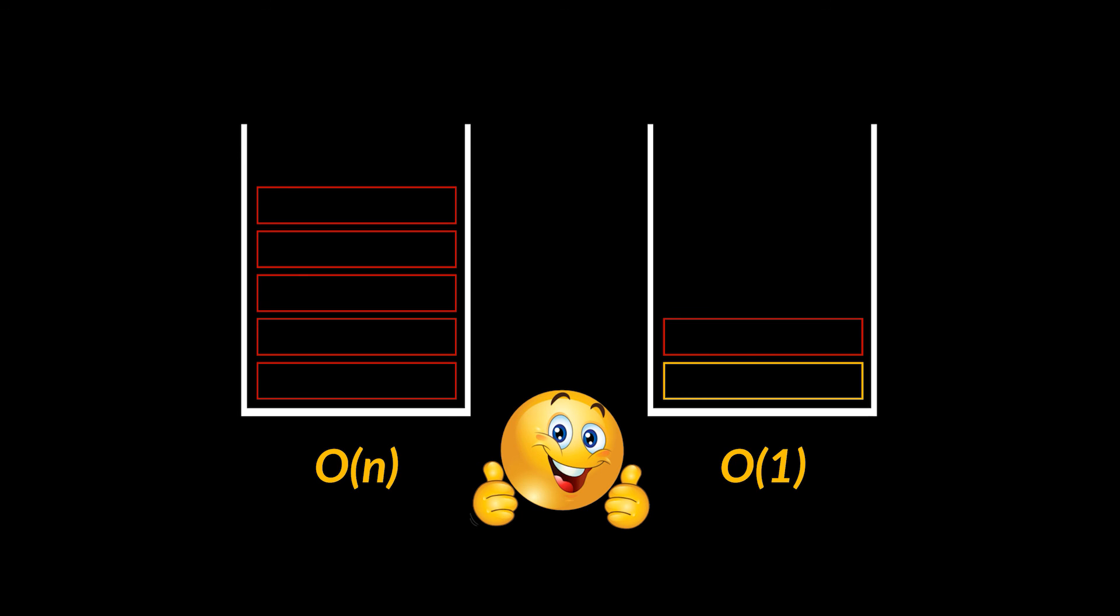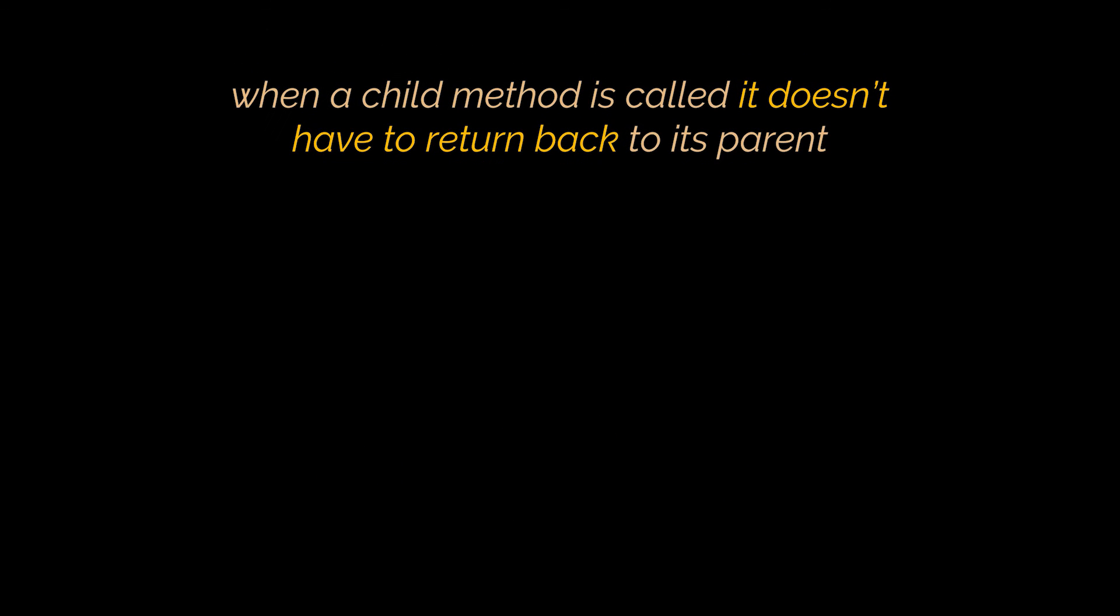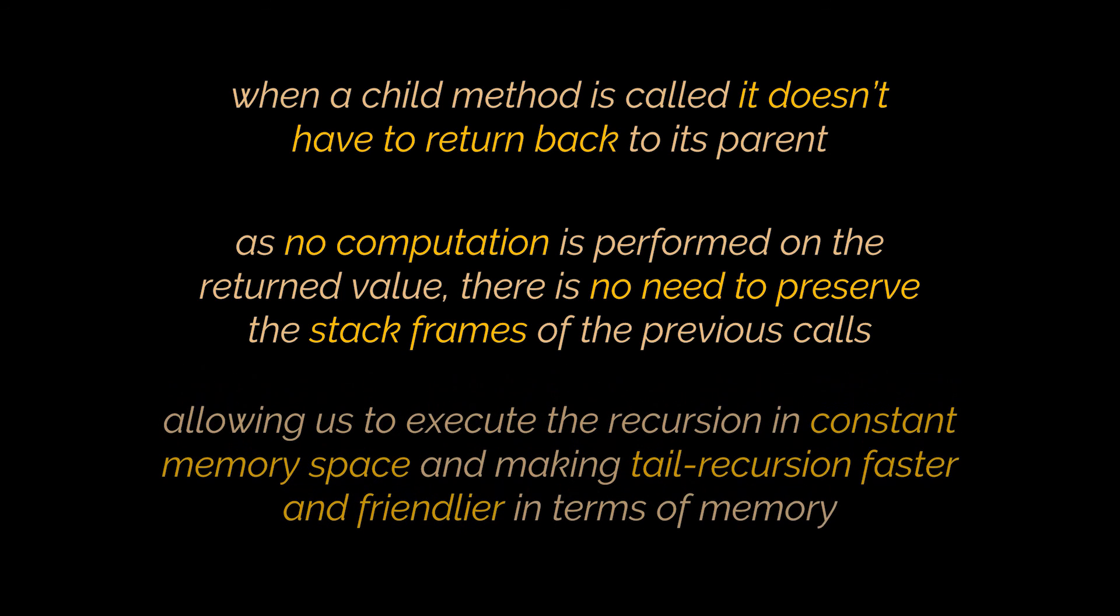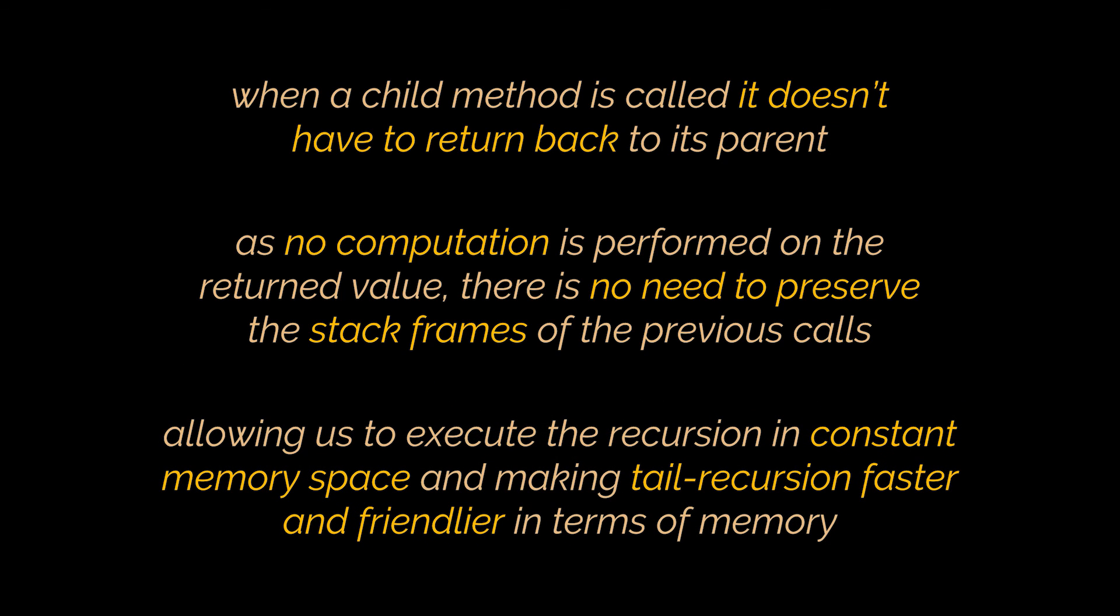So as a recap, in tail recursion when a child method is called it finishes immediately. It doesn't have to return back to its parent, and as no computation is performed on the return value and no statements are left for execution, there is no need to preserve the stack frames of the previous method calls. Thus allowing us to execute the recursion in constant memory space, making tail recursion faster and friendlier than head recursion in terms of memory.